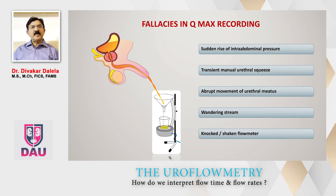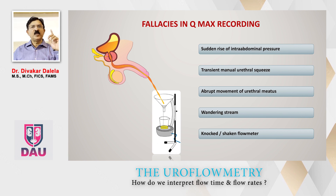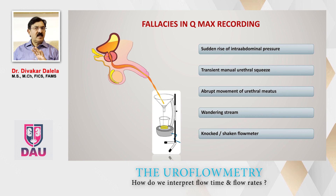Sometimes the patient's shoe touches the stand or the uroflowmeter machine — this is called a knock or a shaken flowmeter — and that results in an aberration giving a spuriously high Q-max. So before you interpret the Q-max values on a patient's graph, please make sure there are no such fallacies in the record.